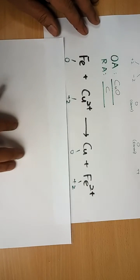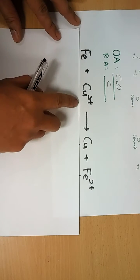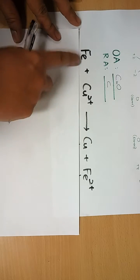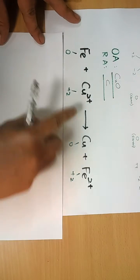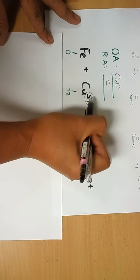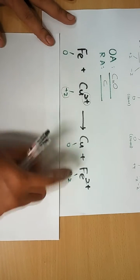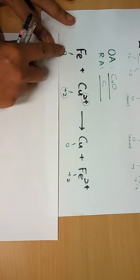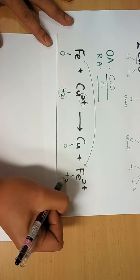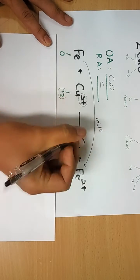The reducing agent is the one that increases — it's the opposite. In this case, carbon is the reducing agent. Now let's try the next reaction: iron and Cu2+. Both iron and copper start as elements — oxidation state 0. Cu2+ is an ion, so its charge is plus 2. Iron was 0 and has become plus 2, so this process is oxidation.